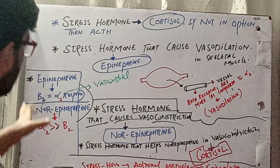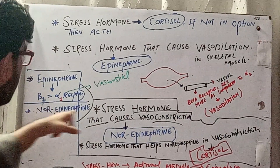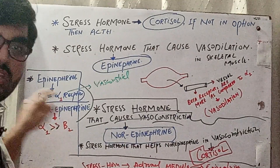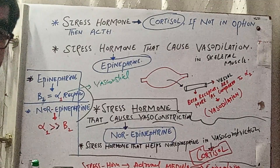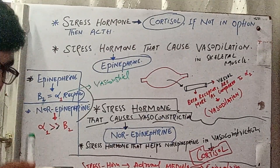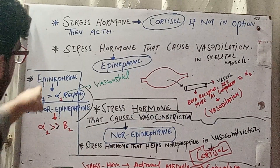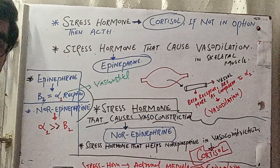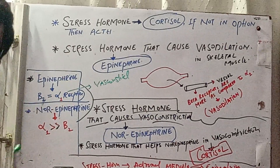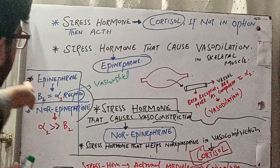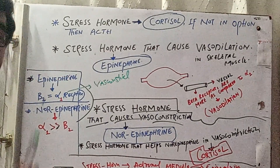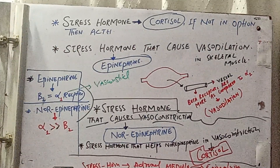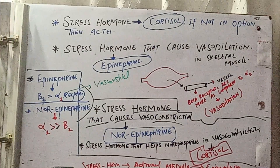Regarding the role of epinephrine in anaphylactic shock and norepinephrine in septic shock: we use norepinephrine in septic shock because its alpha activity is stronger than its beta activity, making it a strong vasoconstrictor. The main pathology in septic shock is vasodilation, so norepinephrine corrects this. Epinephrine is used in anaphylaxis because norepinephrine has weak bronchodilator properties, whereas epinephrine has strong bronchodilator properties as well as vasoconstrictor properties outside skeletal muscle.